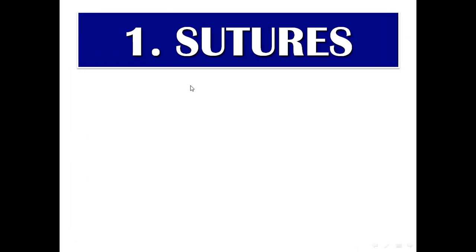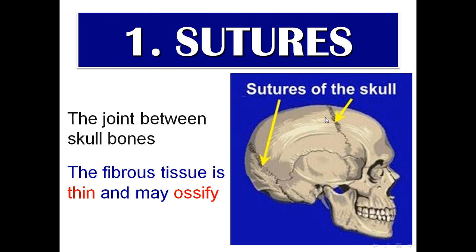Sutures are the joints between the skull bones. The fibrous tissue between the bones is very thin and it may ossify. So sutures are the joints between the skull bones, the fibrous tissue is thin, and may ossify.